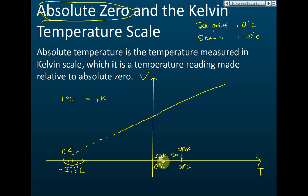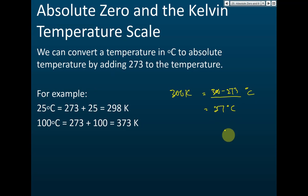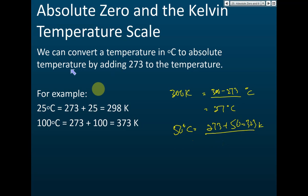More examples: 25 degrees Celsius plus 273 equals 298 kelvin; 100 degrees Celsius plus 273 equals 373 kelvin. How about 300 kelvin — how many degrees Celsius? 300 minus 273 equals 27 degrees Celsius. And 50 degrees Celsius equals 273 plus 50, which is 323 kelvin. That's correct.